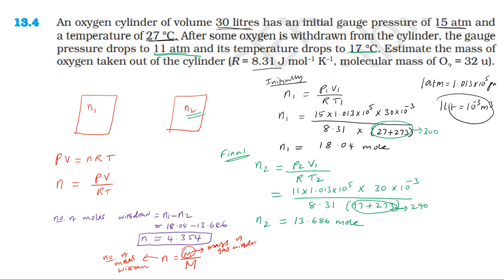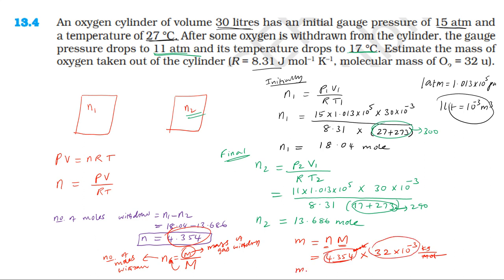The mass of the gas withdrawn equals the number of moles withdrawn multiplied by the molar mass. Number of moles withdrawn = n1 minus n2 = 18.04 minus 13.686 = approximately 4.354 moles. Mass = 4.354 into molar mass of oxygen = 4.354 into 32 into 10 power minus 3 kilogram per mole, giving approximately 0.14 kg.